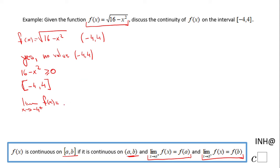f(x) is the radical given to us. So you just plug the number in and you get √(16 - (-4)²) = √0 = 0.